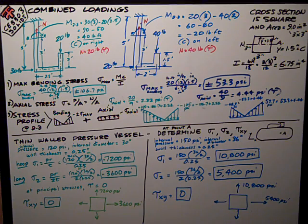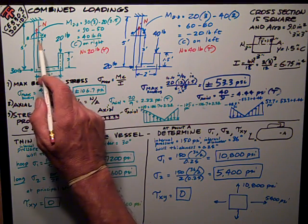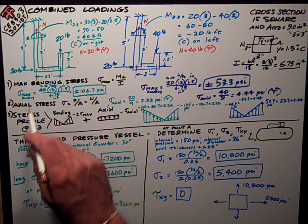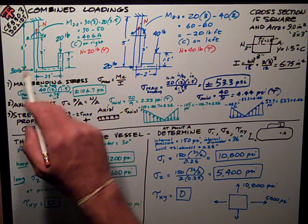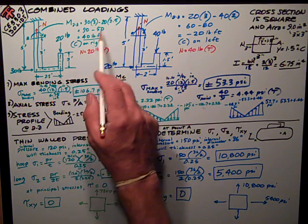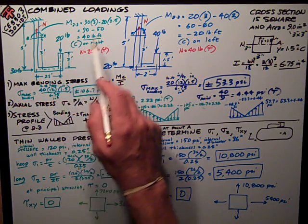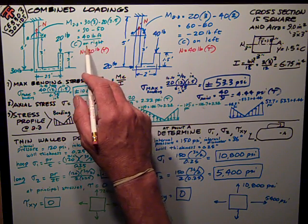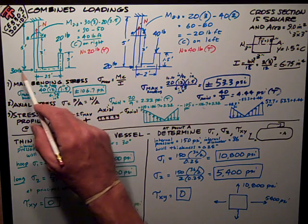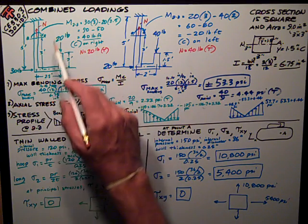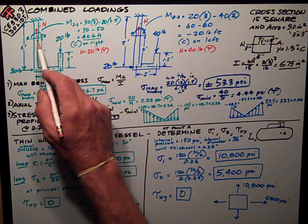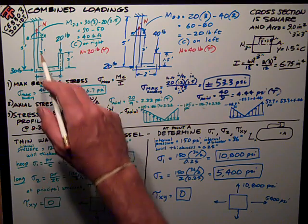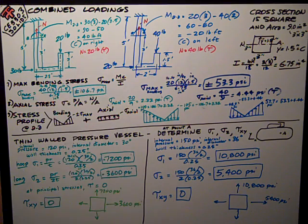First I need to figure out the statics and find the moment at section AA, which is where I want to know the stresses. Summing moments about that point, I get 30 pound-force times 3 feet minus 20 pound-force times 2.5 feet, equal to 90 minus 50, which is 40 pound-feet. The bigger moment comes from the 30 pounds, so it's trying to rotate that way, creating compression on the right side of the section.